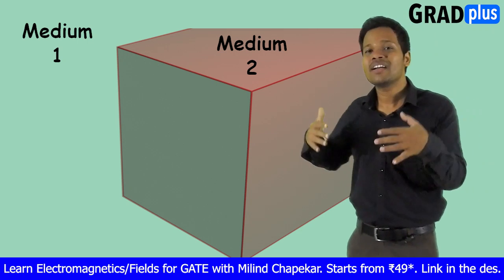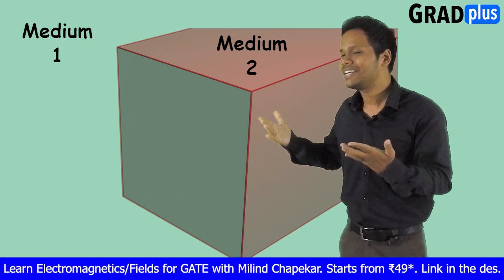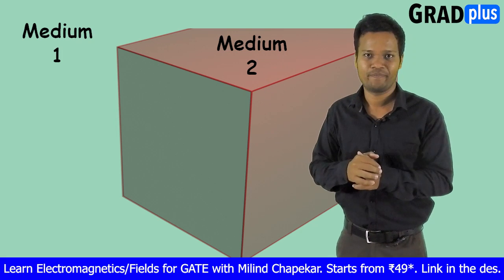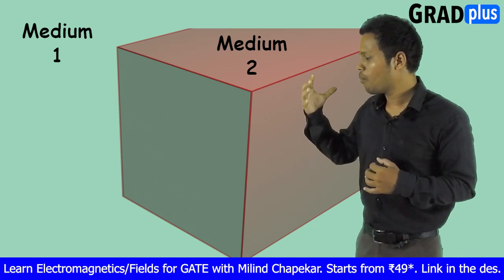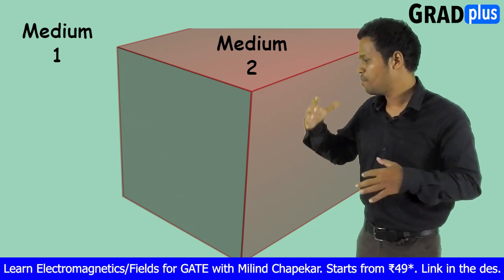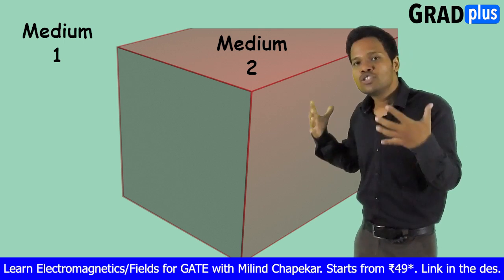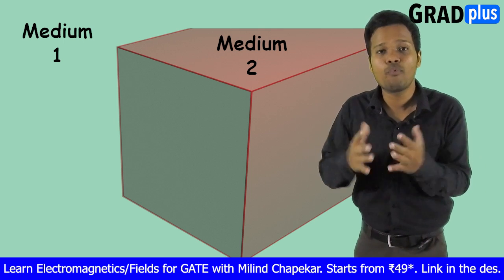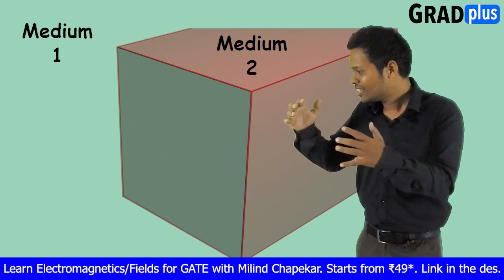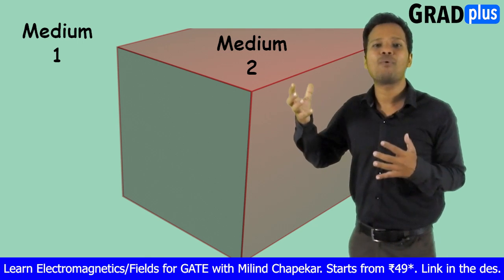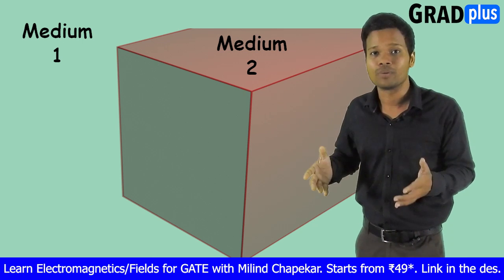This boundary surface can be an irregular surface as well, but for theoretical purposes we generally take it as a simple plane. So let's consider we have two media — medium 1 on one side and medium 2 on the other side — and let's assume that our electromagnetic wave is traveling from medium 1 and incident on this boundary surface, going to enter into medium 2.